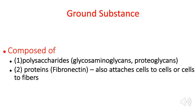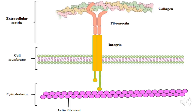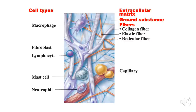We have already discussed the polysaccharide component of the ground substance — glycosaminoglycans and proteoglycans. It is now time to discuss the second component: the protein. In connective tissue, the most important protein is fibronectin — a protein that attaches a cell to another cell, or a cell to a fiber. In this picture, the collagen fiber component of the connective tissue and the cell membrane are linked by the structure labeled as fibronectin. So fibronectin is very similar in function to the glycosaminoglycans and proteoglycans, but it is a protein.